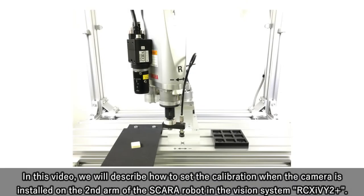In this video, we will describe how to set the calibration when the camera is installed on the second arm of the SCARA robot in the Vision System RCX-IV2+.